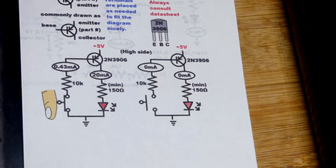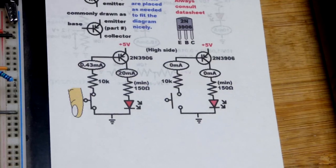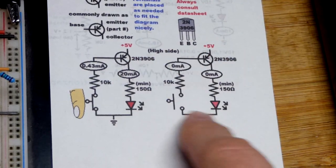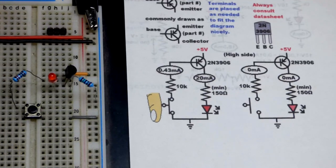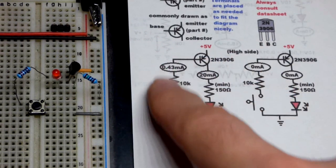We have this situation here: if there's no emitter-to-base current, then there's not going to be any emitter-to-collector current. But you get a little bit of emitter-to-base current when we close the switch.